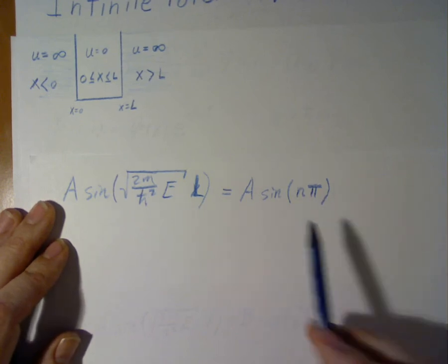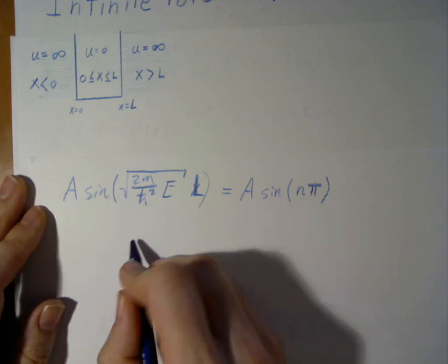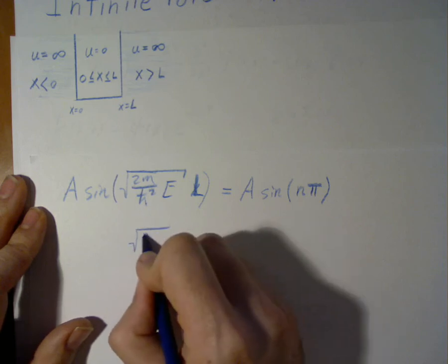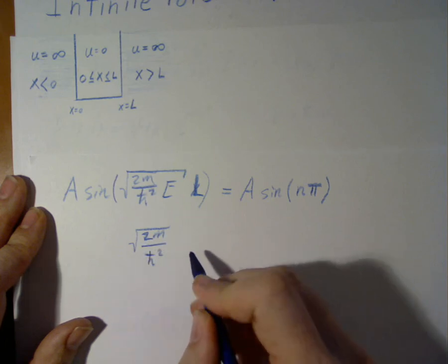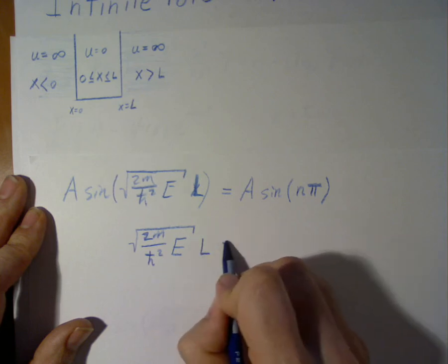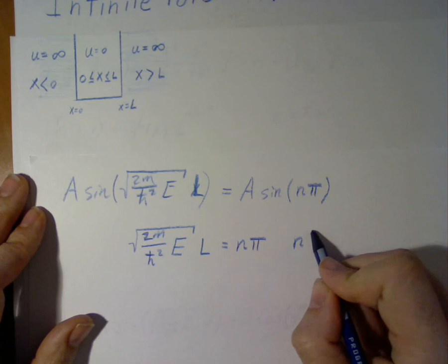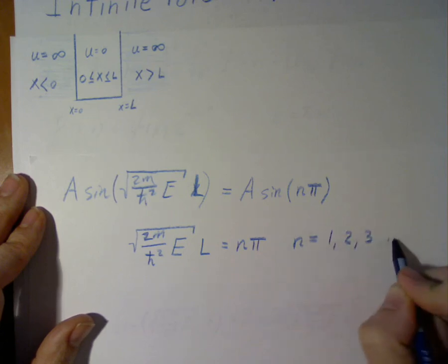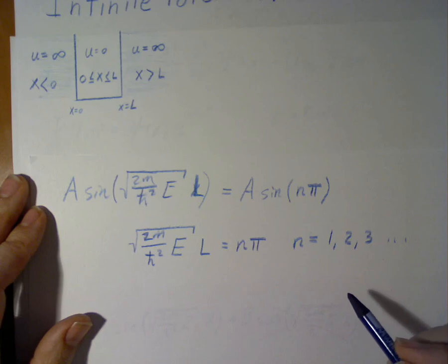Now, a sine function always equals zero when inside the sine function is a multiple of pi. So this means that if this is true, then that is true. So we can simplify ourselves by writing square root of 2m over h-bar squared E times L equals n pi, where n can be an integer 1, 2, 3, and so on. The negative integers and zero don't work or give us no additional useful information.